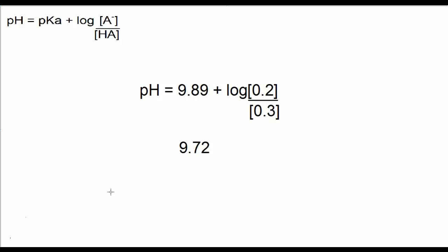Well, if you predicted a little bit more acidic than 9.89, something less than 9.89, you'd be correct because the actual pH is about 9.72.